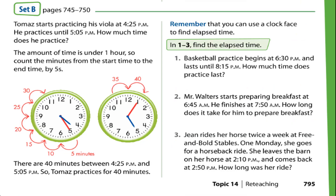Set B, questions 1 to 3: you have to find the elapsed time. The three main steps are: first, find the starting time; second, count the hours; and third, count the minutes.